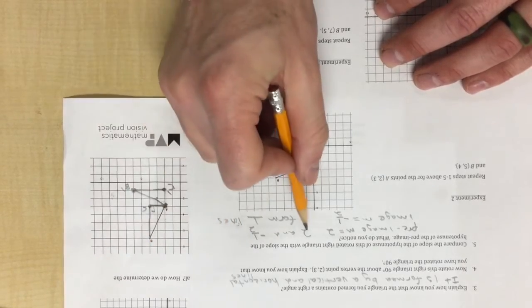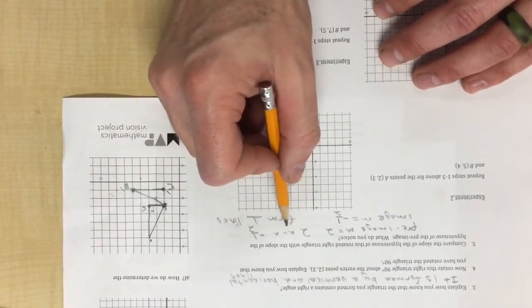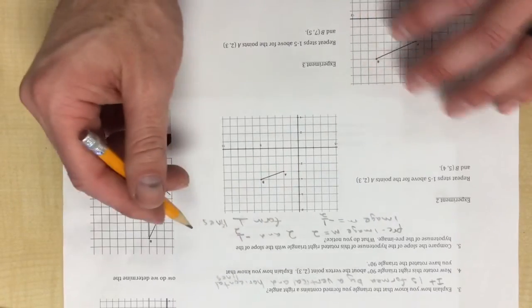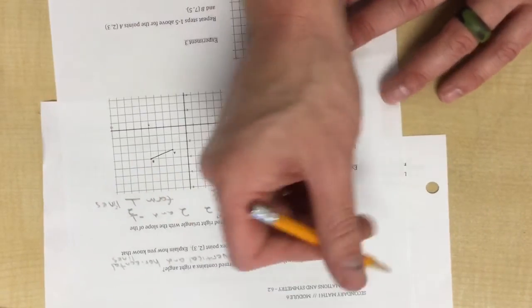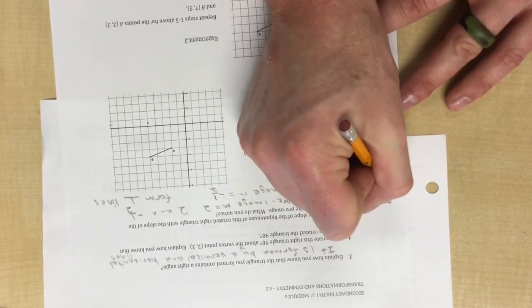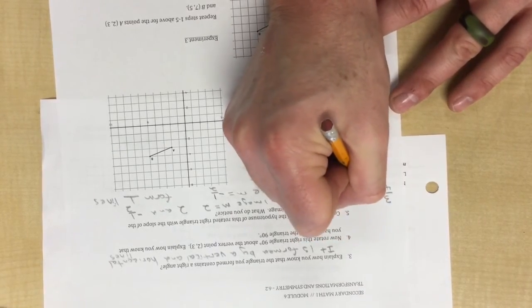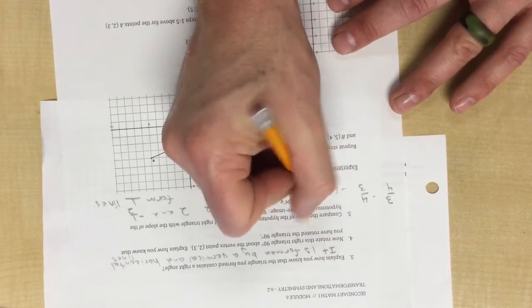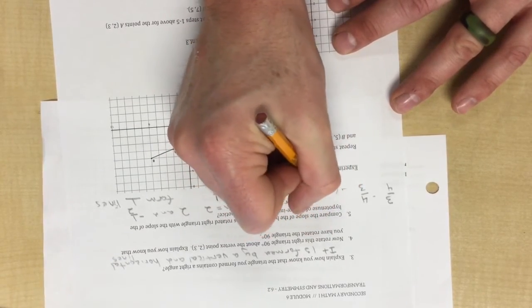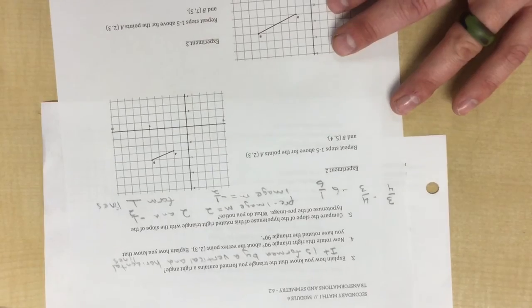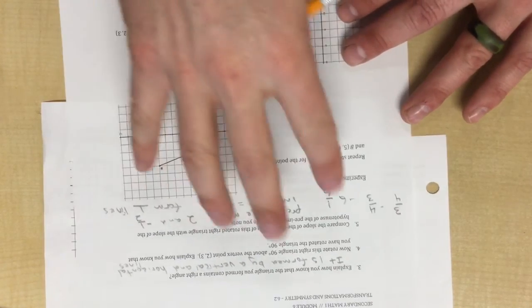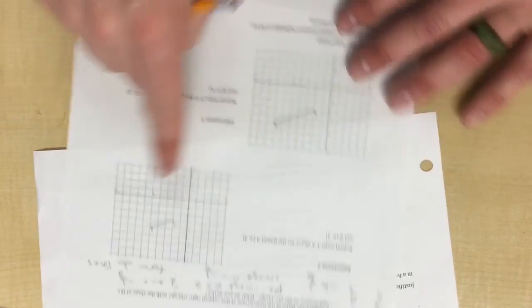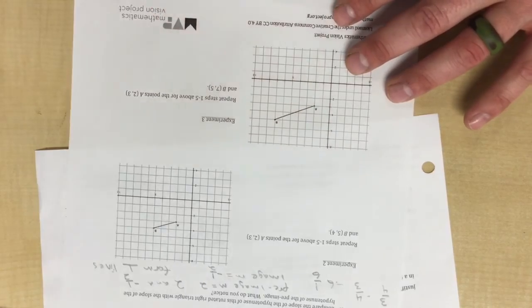And we learned about this relationship last week. So as you move forward, they're not all going to be as easy as 2 and negative one-half. They might be like three-fourths and negative four over three, as an example, or negative 6 and one over 6. But you guys get the idea. So take what you know from problem number one and continue it with these lines as well. Thank you.